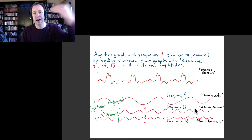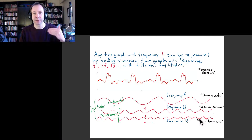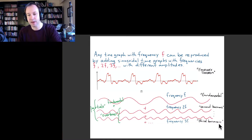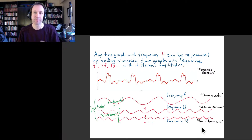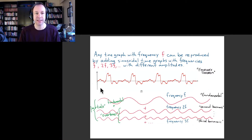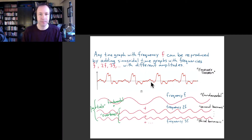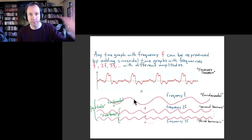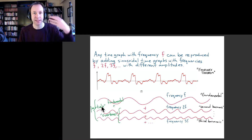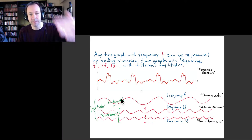Those higher pure tones are referred to as the second harmonic — the one that's double the frequency — the third harmonic, the fourth harmonic, and so forth. Another bit of language sometimes used is that the wave splits up into various partials. The pure tones that compose the sound are the partials, which include the fundamental plus various overtones.